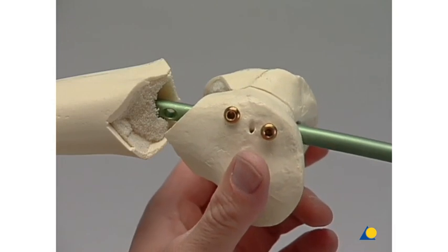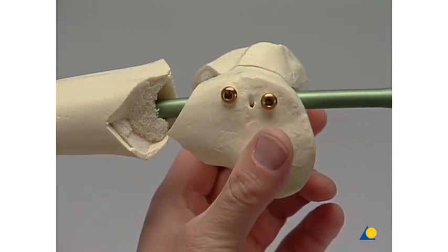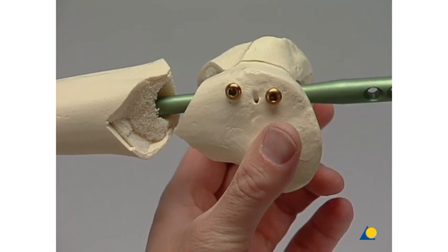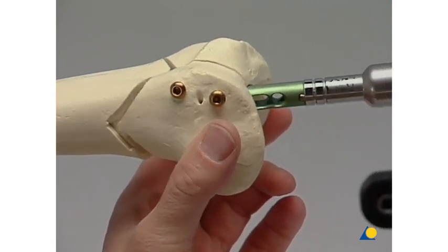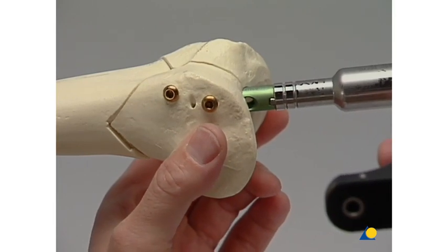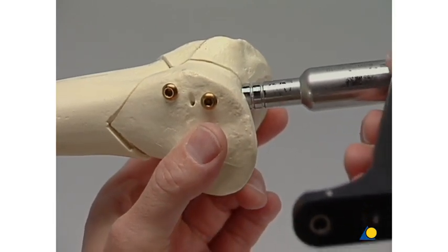In cases of complex articular fractures, drilling open the medullary canal millimeter by millimeter is recommended. When the nail is inserted, it can function as a reduction aid. The distal fragment can be threaded towards the proximal fragment.